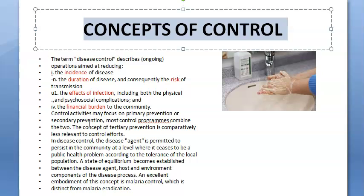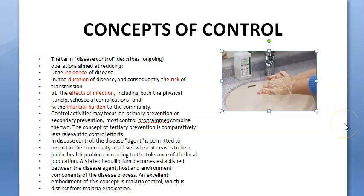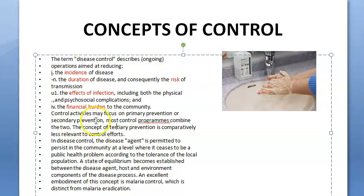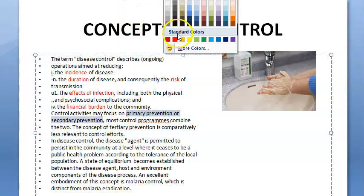So how will you do all this? Hand washing, personal hygiene — there are a lot of types of control. Under primary prevention you will write health promotion, specific protection, vaccination, etc. Under secondary prevention you will write early diagnosis and treatment. So primary prevention and secondary prevention are the main components here.